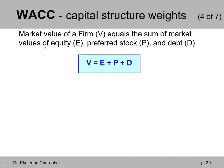We say that the market value of a firm, which we denote by V, equals the sum of the market values of equity E, preferred stock P, and debt D. So V equals E plus P plus D, all in capital letters.